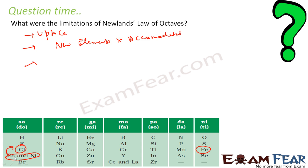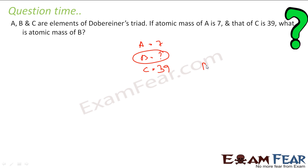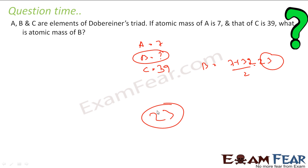A, B, C are elements of a Dobereiner triad. The atomic mass of A is 7, B is unknown, and C is 39. Find the atomic mass of B. Dobereiner stated that the atomic mass of the middle element is the mean of the first and last: (7 + 39) / 2 = 23. So the atomic mass of B is 23. The three elements with similar properties form a triad, and the middle element's atomic mass equals the average of the outer two.